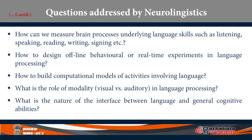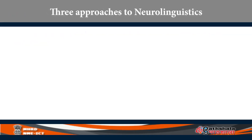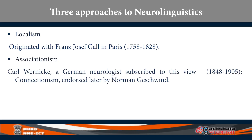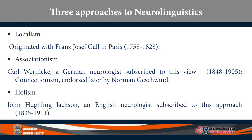It is obvious that I will not be able to deal with all these questions in this lecture. I will focus on a few points, especially giving some idea about the history of development of Neuro-linguistics across three major approaches: starting with localism, which originated with Franz Joseph Gall in Paris (1758–1828); then associationism, associated mainly with Karl Wernicke, a German neurologist (1848–1905); and the third approach, holism, associated with Hewling Jackson, an English neurologist (1835–1911).